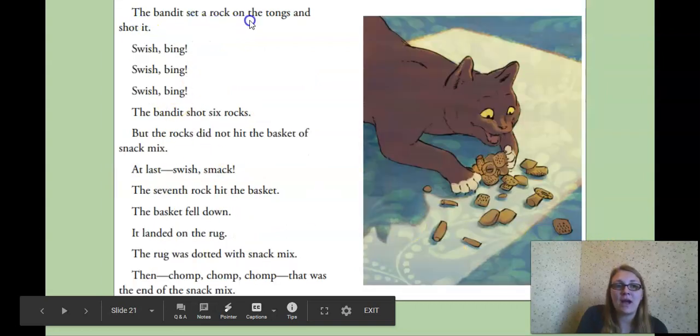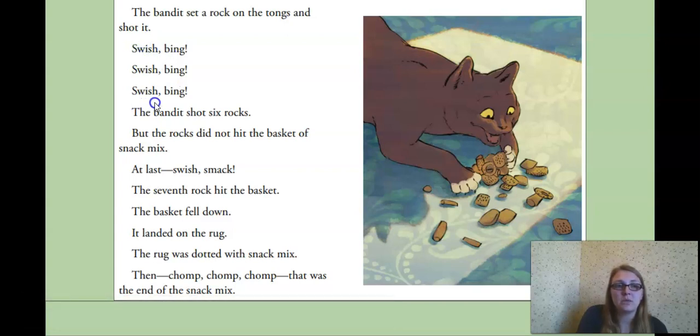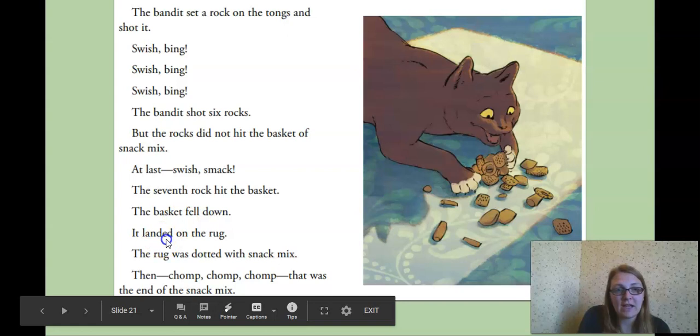The bandit set a rock on the tongs and shot it. Swish! Bing! Swish! Bing! Swish! Bing! The bandit shot six rocks. But the rocks did not hit the basket of snack mix. At last. Swish! Smack! The seventh rock hit the basket. So, seven rocks. The basket fell down. It landed on the rug. The rug was dotted with snack mix. Then, chomp, chomp, chomp. That was the end of the snack mix.